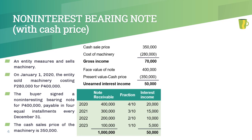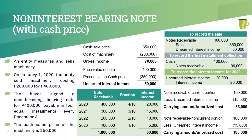This 50,000 pesos is recognized as unearned interest income and amortized over the term of the note. Here is the schedule of amortization. The fractions are derived from the remaining balance of the note at the beginning of the period. Hence, interest income in 2020 is computed as 50,000 × 4/10, the interest income in the second year is computed as 50,000 × 3/10, and so on. Amortization of the unearned interest income is recorded as a debit to unearned interest income and a credit to interest income.